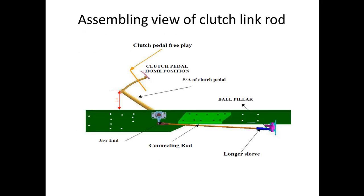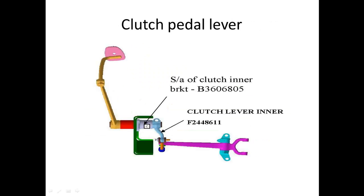This is the assembling view of the clutch linkage rod. This is the clutch pedal. This is the project fixer — it is fixing this part. This is the chassis. This is the clutch linkage. This is the clutch pedal lever. Pushing the lever disengages and engages the clutch with the automobile vehicle components.